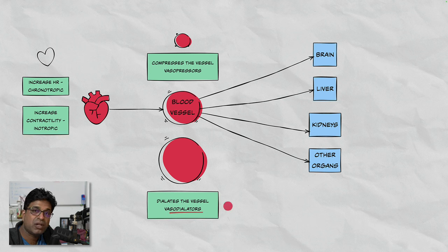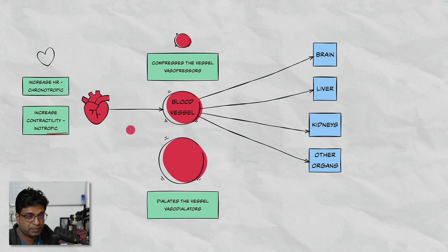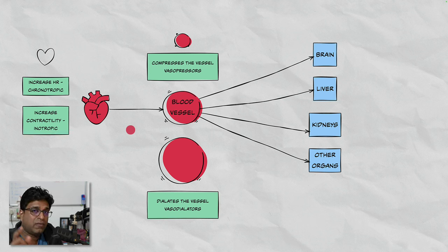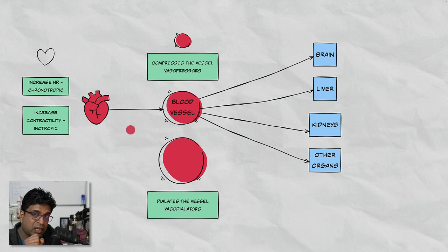Also to make it complete: any agent that dilates blood vessels is called a vasodilator. Since we're discussing how to manage shock and increase blood pressure, we will not discuss vasodilators today. So to summarize: any agent acting on the heart to increase contractility is called an inotrope; chronotropy means increasing heart rate — these agents can have mixed effects. Vasopressors act on blood vessels, squeeze them, and increase blood pressure.